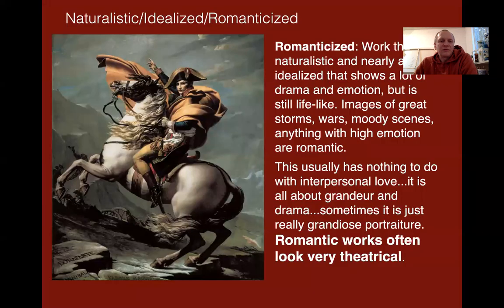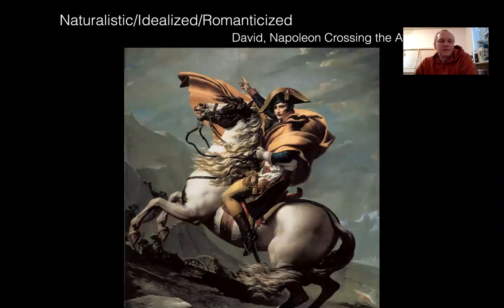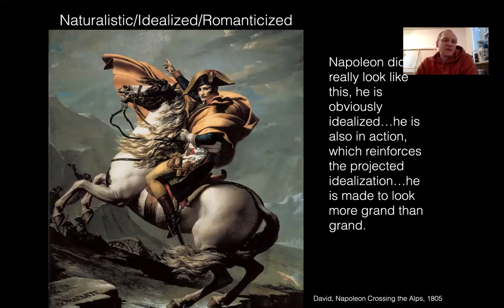If we go back to this portrait of Napoleon, you can see that even though it's a portrait, there's still a lot of action happening — an implied sense of movement. 'Napoleon Crossing the Alps' is the title. Napoleon didn't really look like this. He's idealized. He's also in action, which reinforces that projected idealization. He's made to look more grand than he really was — portrayed as even more grand, made into a hero, made perfect — but many of you have heard that he was not a perfect-looking fellow.